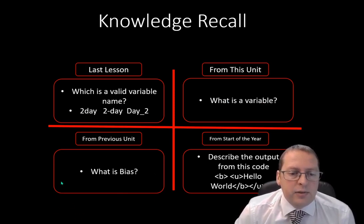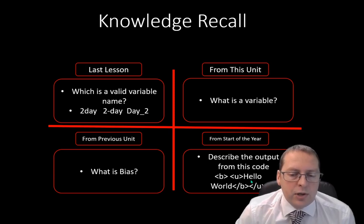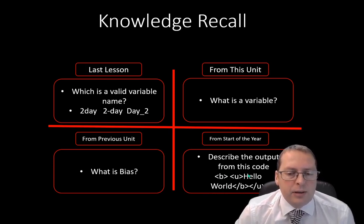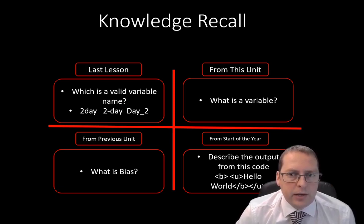From previous units you need to explain what bias is, and from the HTML unit we looked at the tags b, u, forward slash b, and forward slash u. Explain how that bit of HTML code would actually be represented on a web page. Pause the video, complete your knowledge recall, and then continue on with our Python lesson.